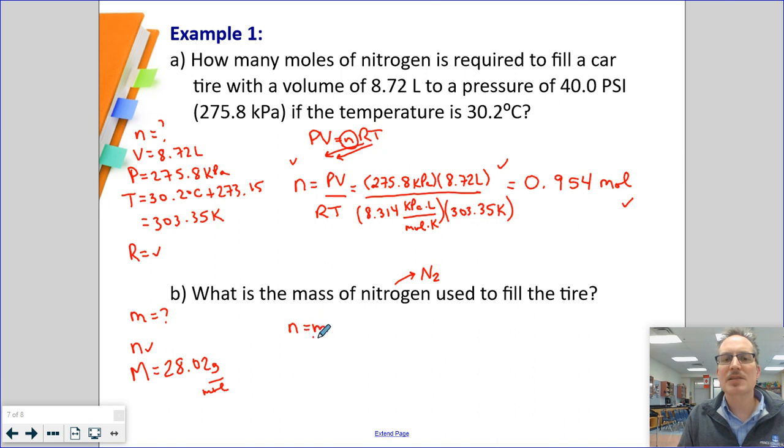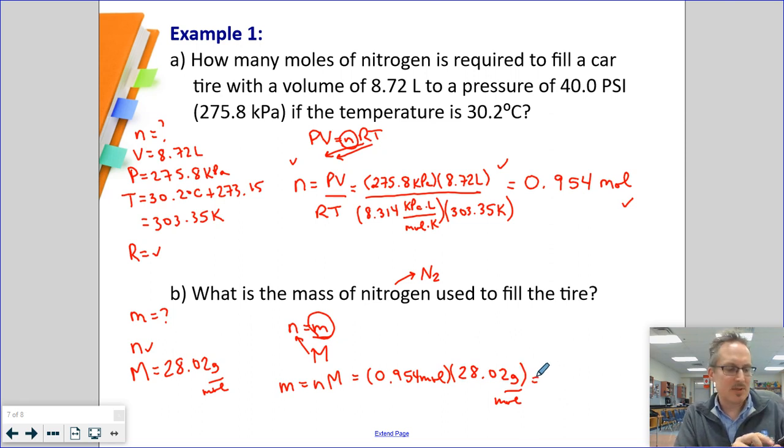Moles equals mass over molar mass. This time we're solving for mass, so we're going to move our formula around. Mass equals moles times molar mass. We're going to take 0.954 moles, but we're actually going to take the whole number that's still in my calculator, and multiply it by 28.02 grams per mole. Full calculator number times 28.02, enter. We're allowed still only 3 sig figs, so my answer is 26.7 grams. You would get one mark for formulas, one mark for substitution, one mark for answer in sig figs with units. This whole question would have been out of 6 marks.